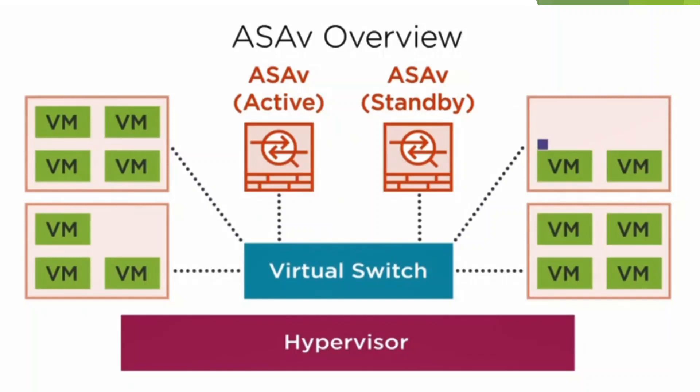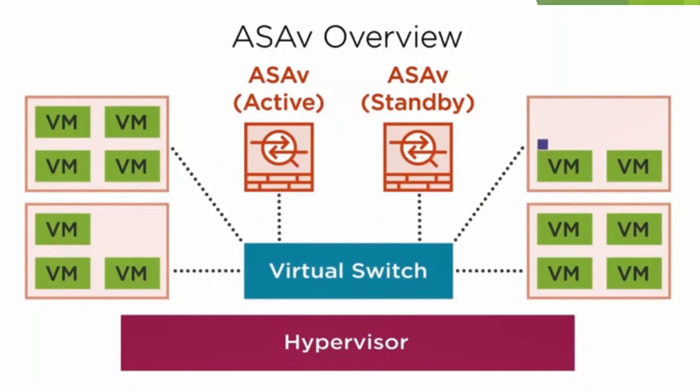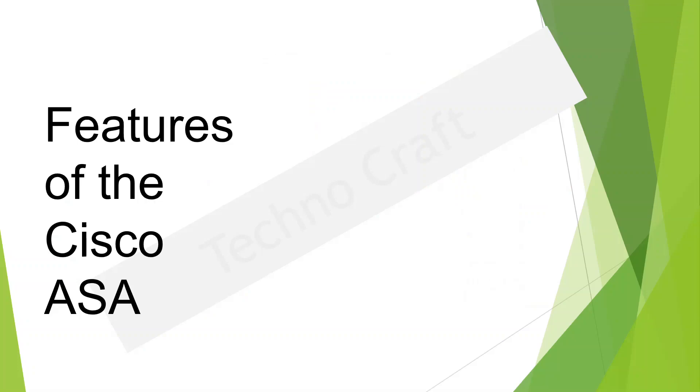We'll do a quick implementation and install an ASAv on ESXi so you can see what that looks like. It supports most of the same features as the hardware appliance. One example of something it would not support is clustering — you would need the hardware appliance for clustering. So seeing ASAv is not uncommon these days, but let's get into the features that are supported on both your hardware appliance and the ASAv.